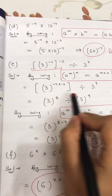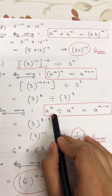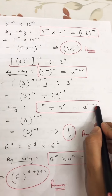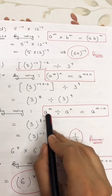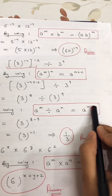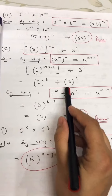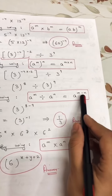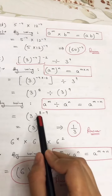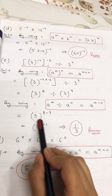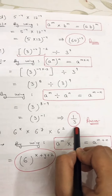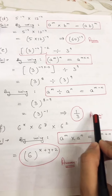Base is same, powers are different, and there is a division sign, so we use: a raised to power m divided by a raised to power n equals a raised to power m minus n. So 3 raised to power 8 minus 9. Both values are positive so we subtract: 8 minus 9 is minus 1. Any number raised to power minus 1 equals its reciprocal, so the answer is 3 raised to power minus 1, or 1 upon 3. Both forms are correct.